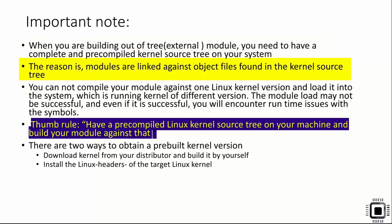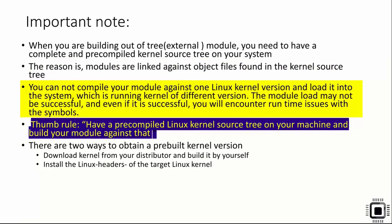Modules are linked against object files found in the kernel source tree. You cannot compile your module against one Linux kernel version and load it into a system running a different kernel version - the module load may not be successful, and even if it is you'll encounter runtime issues with symbols. The thumb rule: have a pre-compiled Linux kernel source tree on your machine and build your module against it. You can download the kernel from your distributor and build it yourself.